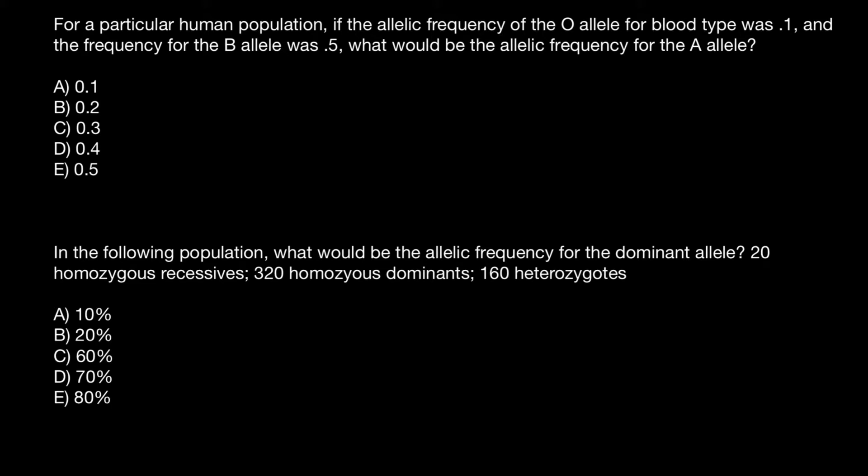Take a look. The ABO blood group system is made by three alleles: allele A, allele B, and allele O. These three alleles produce four blood groups: blood group A, blood group B, blood group AB, and blood group O. But all four blood groups are made by only these three alleles. So these three alleles represent 100% in this gene pool.